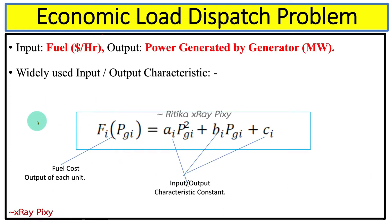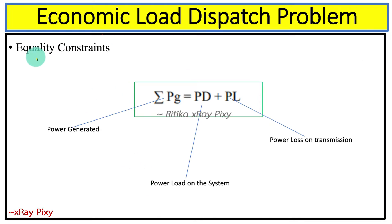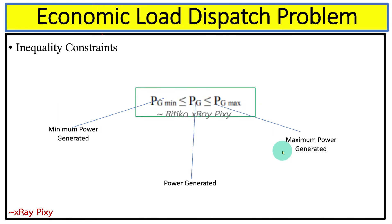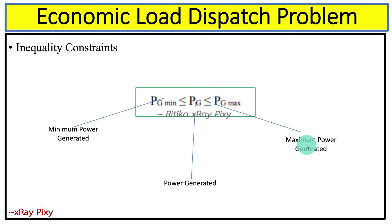As you can see here, we use widely-used input-output characteristics with a quadratic equation to calculate the fuel cost, which has three constants. The equality constraint states that the total power generated equals the power load on the system plus the power loss on transmission. The inequality constraint requires that the computed power generated must satisfy minimum and maximum power bounds for each unit.